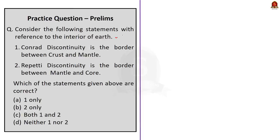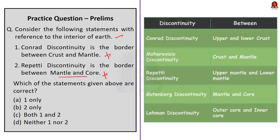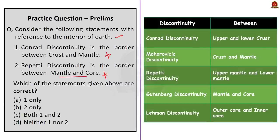The second question involves two statements about Earth's discontinuities. Statement 1: Conrad discontinuity is the border between crust and mantle — incorrect, Conrad discontinuity separates upper and lower crust. Statement 2: Repetti discontinuity is the border between mantle and core — incorrect, Repetti discontinuity separates upper and lower mantle. Since both statements are wrong, the correct answer is option D — neither one nor two.